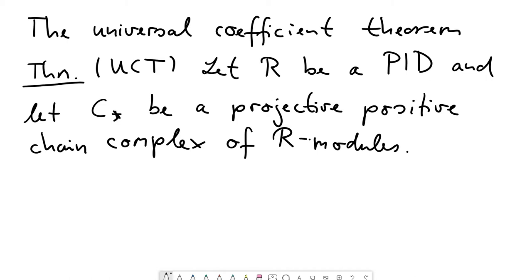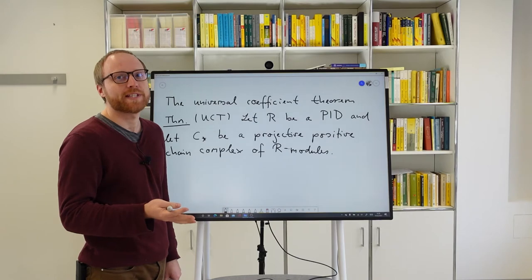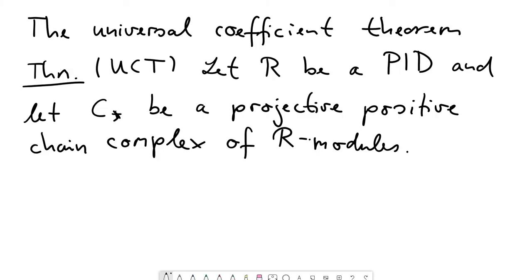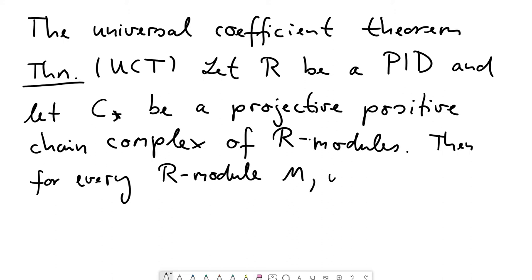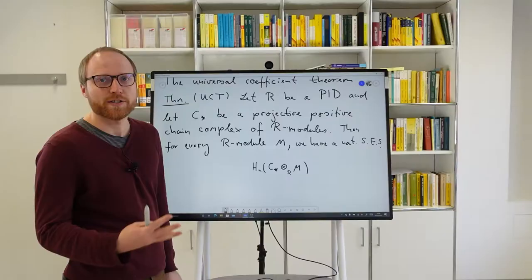The question the Universal Coefficient Theorem wants to answer is: what happens if I take this chain complex C* and form the tensor product with some given fixed R-module M, and afterwards take the homology? How does this new homology relate to the former homology where I did not take any tensor product? So let's take such an R-module M. Then the statement is: for every R-module M, we have a natural short exact sequence of the following type.